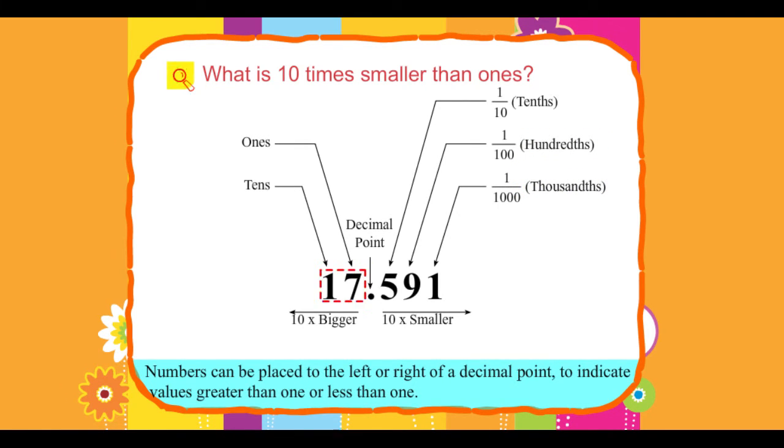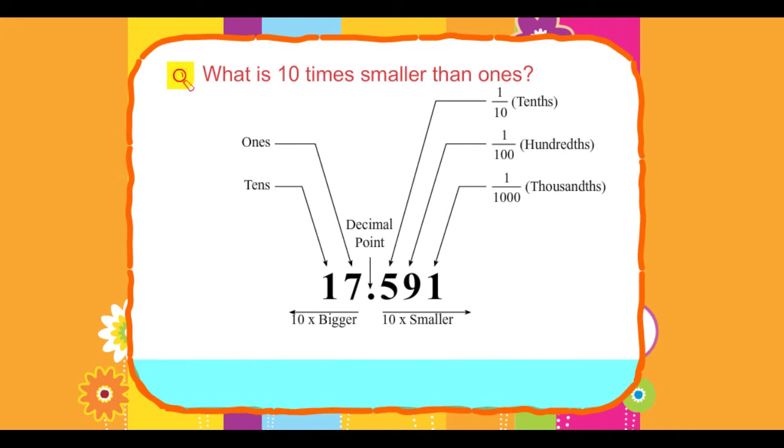Numbers can be placed to the left or right of a decimal point to indicate values greater than 1 or less than 1. The number to the left of the decimal point is a whole number, 17 for example.